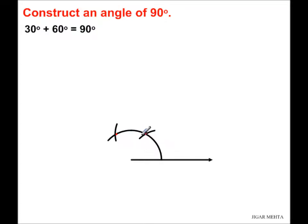So what I'm going to do is this 60 degree, I'm going to bisect it so that I get two halves each of 30 degrees and that's how I'm going to add 30 degrees to this existing 60 degrees.